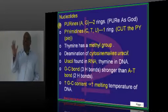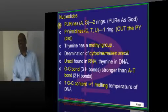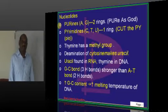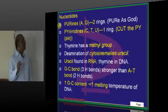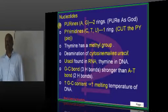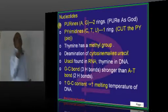What are Purins? What are Pyramidins? I always used to hate this question because I always used to forget it. Purins are A and G. Pure as God.